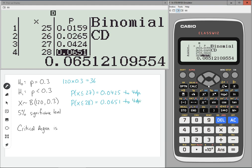So this one is less than 0.05. This one is greater than 0.05. And so the critical region is any value where the significance were less than the significance level. So that's less than or equal to 27. So 0 is less than or equal to x is less than or equal to 27. This is the critical region for this test.